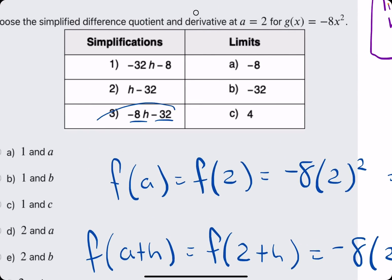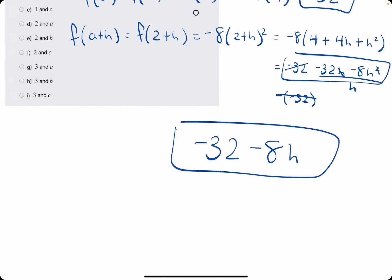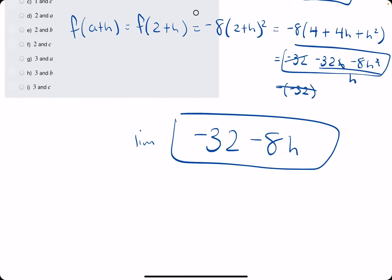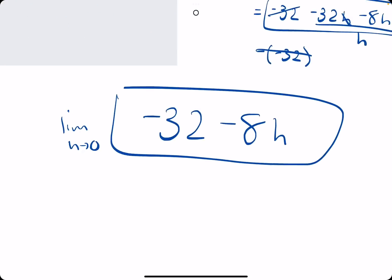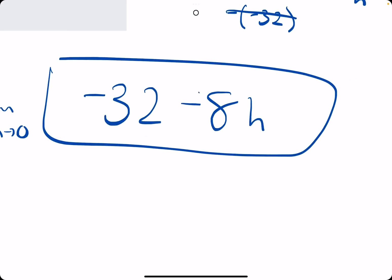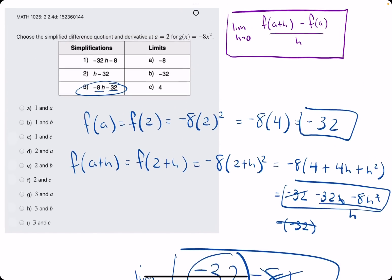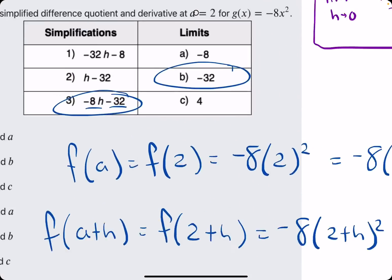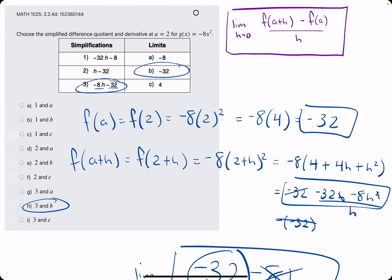Negative 32 minus 8h. So number 3. And then to evaluate the derivative is to evaluate the limit as h goes to 0. So the h term goes away and we're just left with negative 32 for our limit. So again, 3 and b is actually our answer.